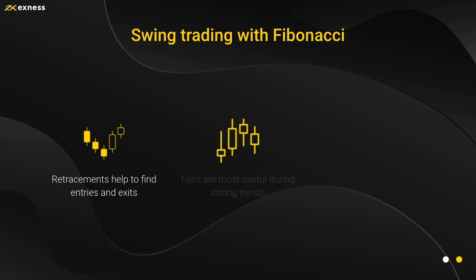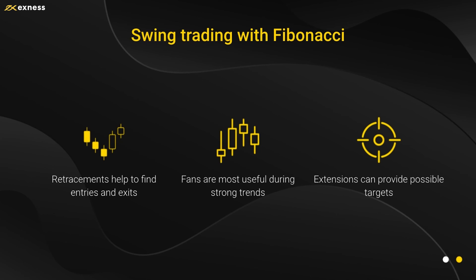In summary, Fibonacci retracements are the most popular Fibonacci tool among traders in general, helping to find entries and exits and support and resistance. Fans can be quite similar but are generally more useful during strong trends, and they can also help to project potential targets. Extensions are arguably even better at doing that than fans, and they can also perform some of the same functions as retracements and fans, depending on the context and the strength of the trend. It's a very good idea to experiment with the different Fibonacci tools to find which one works best for you.